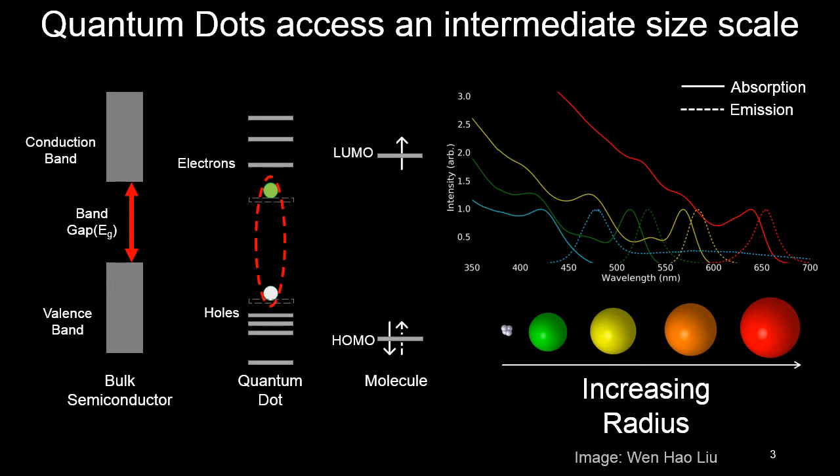We also get the nice property of molecules that typically we just have one emitting state, and you can see these two properties demonstrated on the right in the spectra I show. The solid lines show the absorption spectra absorbing all wavelengths across the visible, and the dashed lines show that nice narrow emission I was talking about.